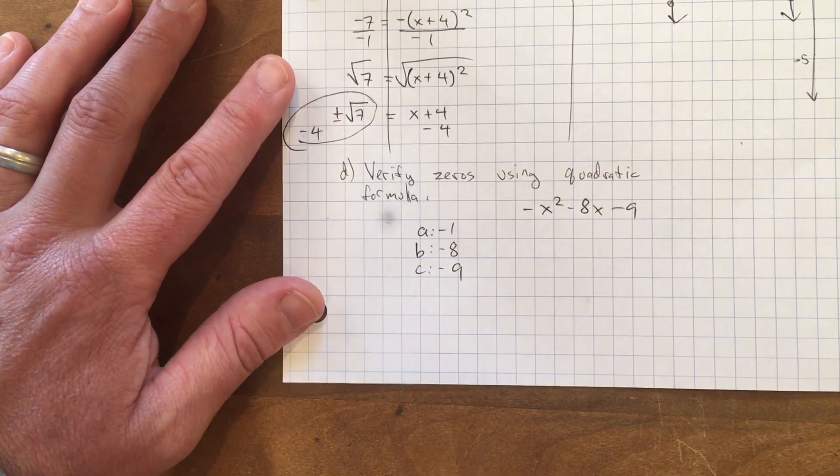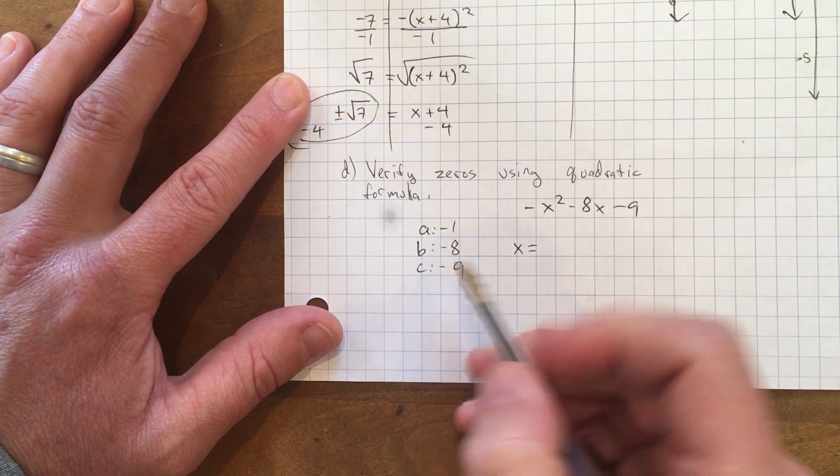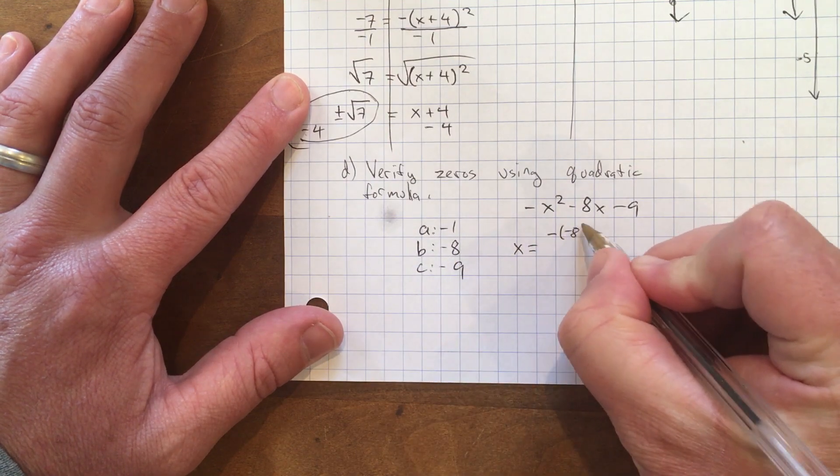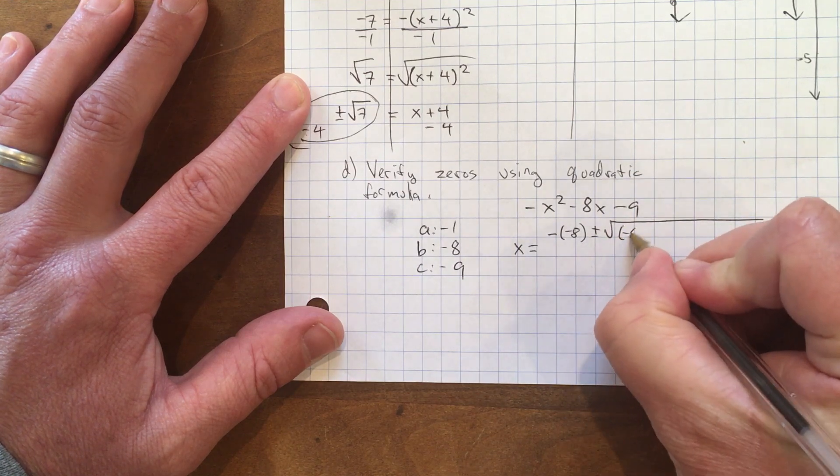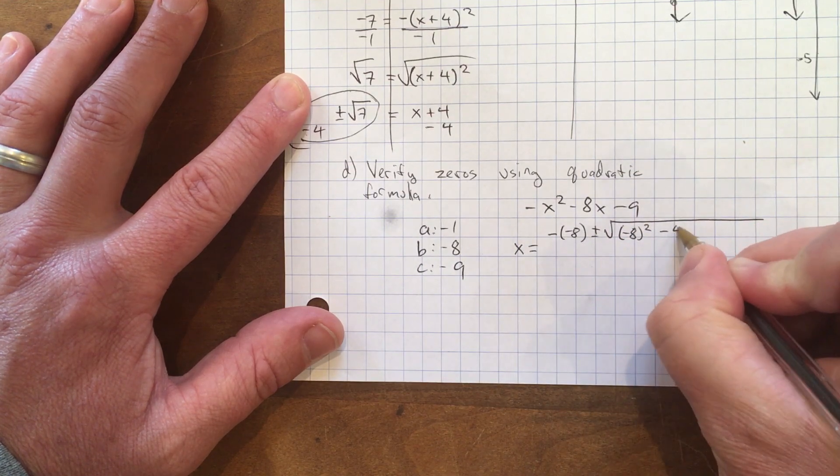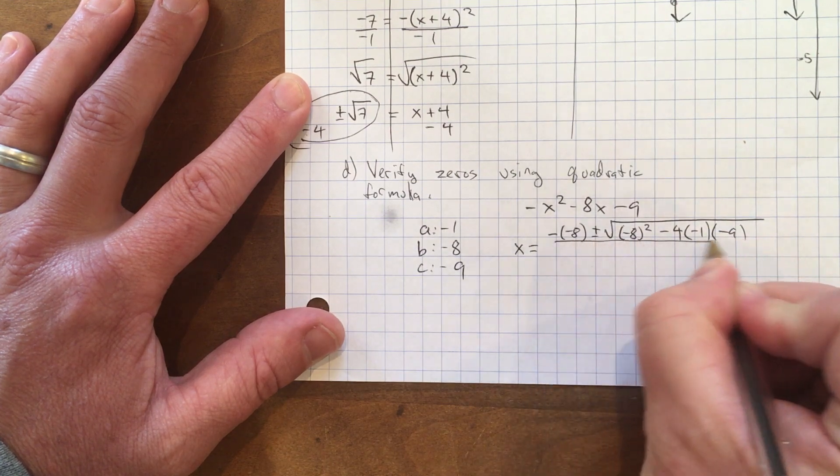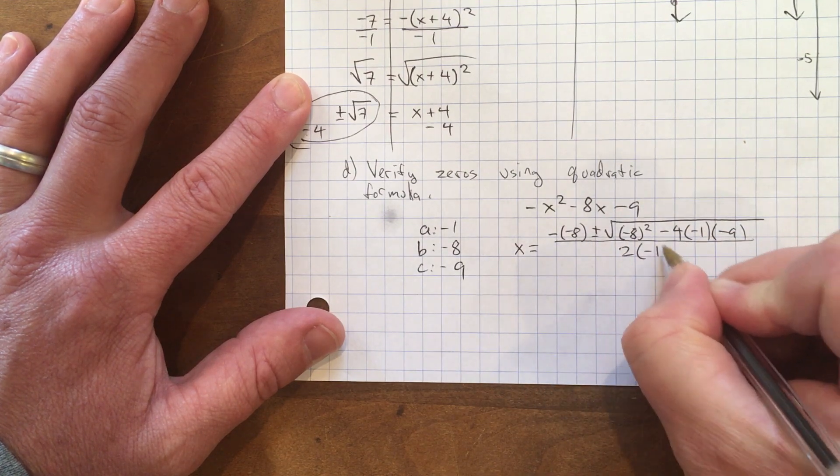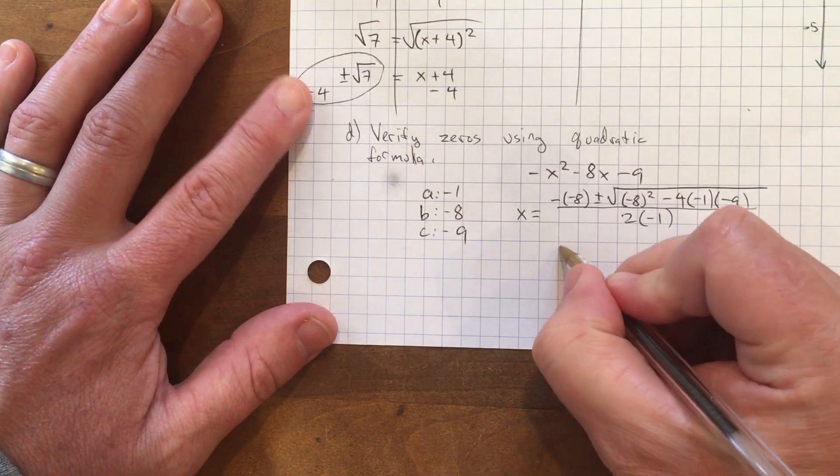Let's start plugging things in. I do -b, so -(-8) ± √[(-8)² - 4(-1)(-9)], and I'm going to divide all of that by 2(-1). Let's see what we get.